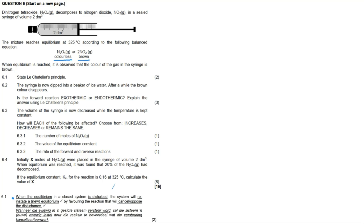Question 6.2: the syringe is dipped into a beaker of ice water and after a while the brown color disappears. Is the forward reaction exothermic or endothermic? The first observation is that dipping into ice water favors the reverse reaction, because the syringe turns colorless — meaning less brown NO₂ (product) and more N₂O₄ (reactant). So the reverse reaction is favored.